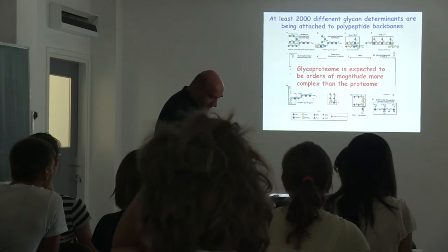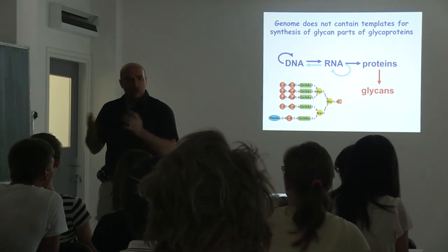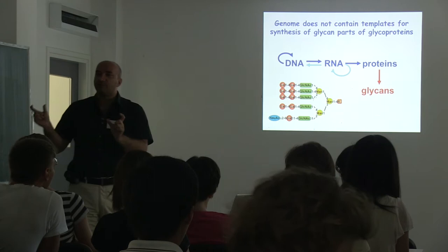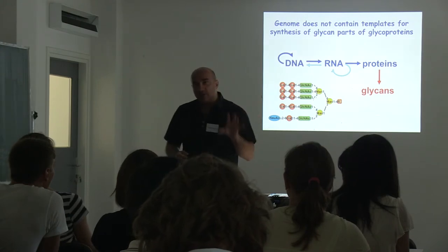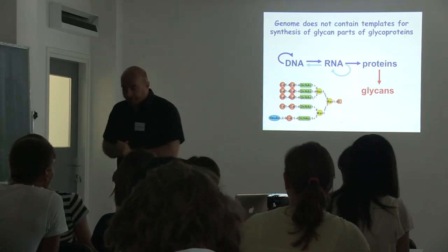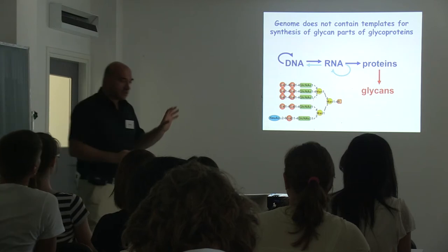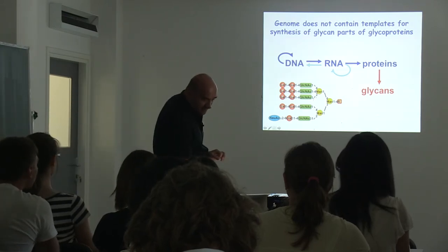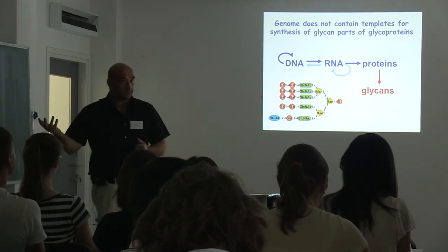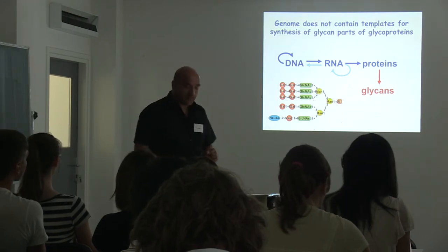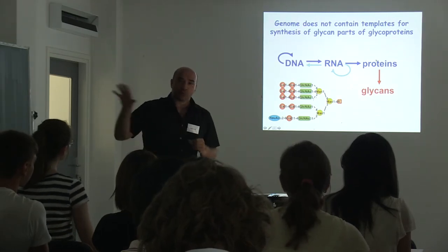To make things even worse, there is no genetic template for glycans. Nowadays people don't actually sequence proteins — they sequence tiny bits, go to a database, look at the gene, and translate it into protein. Most of our structural information is based on DNA sequence. For glycans, there is no direct genetic template. We know that for each protein there is a gene transcribed into RNA, then translated into protein. Glycans do not have their own genes.